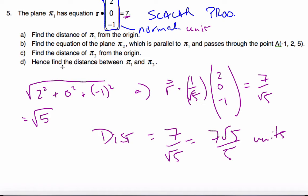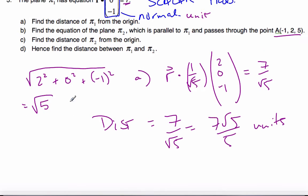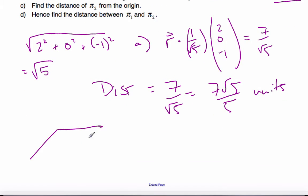Part B says, find the equation of plane 2, which is parallel to plane 1, but passes through this point. Alright, so if I have a plane, and I have another plane that's parallel to it, this normal vector has to be a scalar multiple, or parallel to this normal vector.